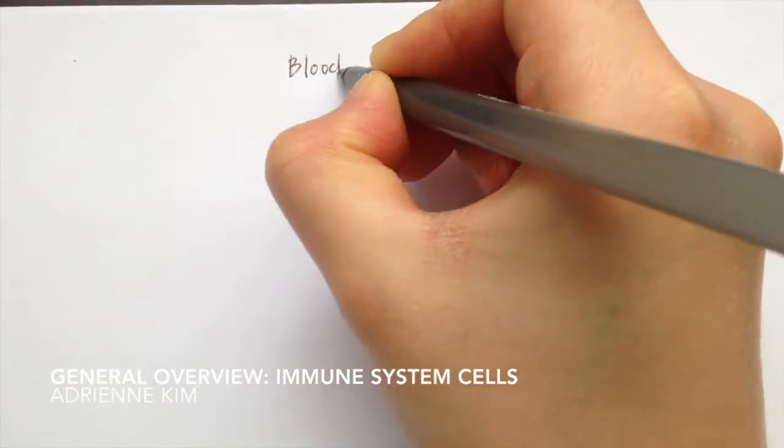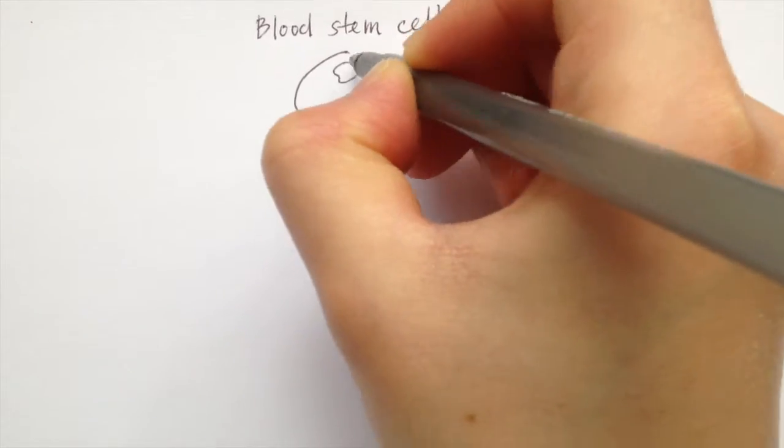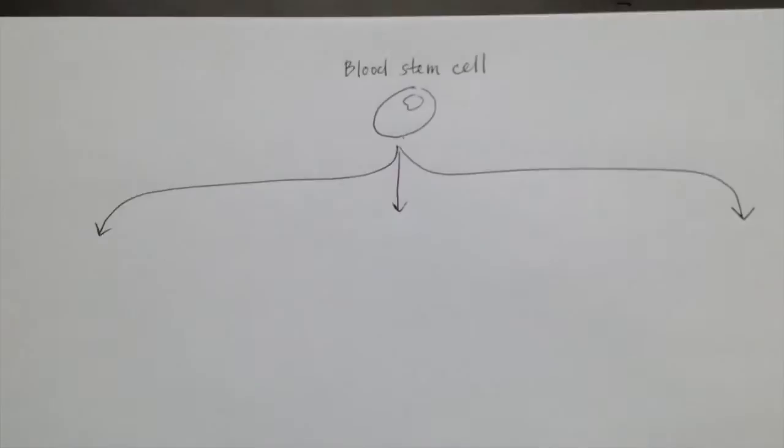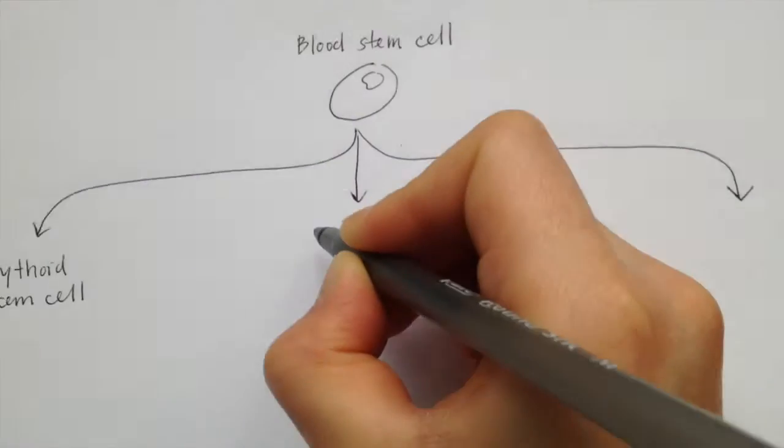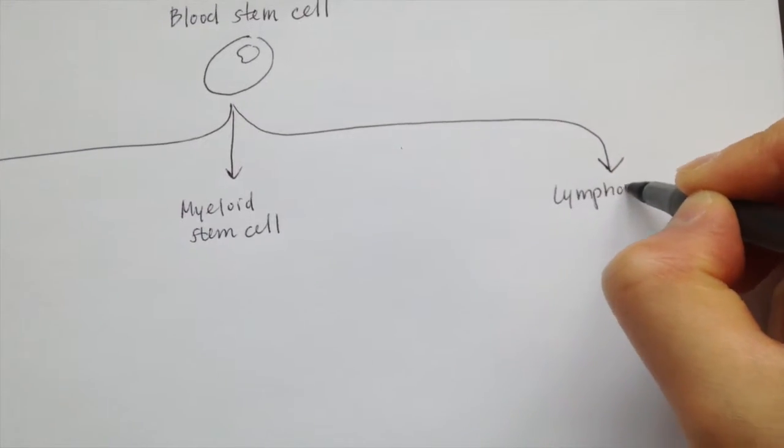The cells of the immune system all originate from the blood stem cell. Three other stem cells will arise from the blood stem cells. These three are the erythroid stem cell, myeloid stem cell, and lymphoid stem cell.